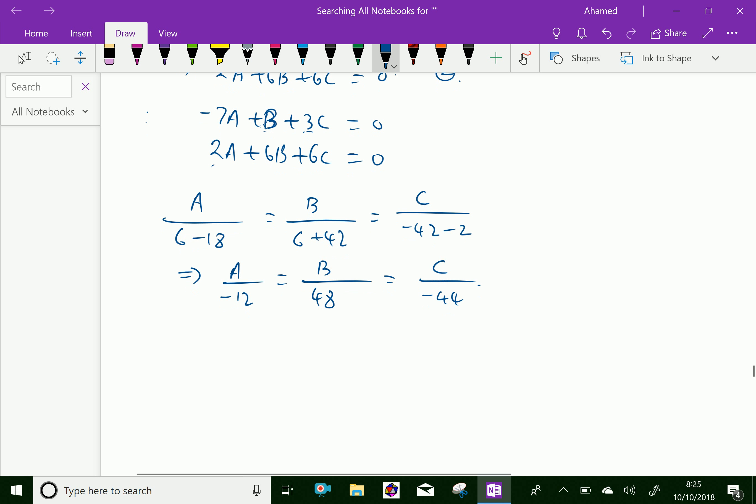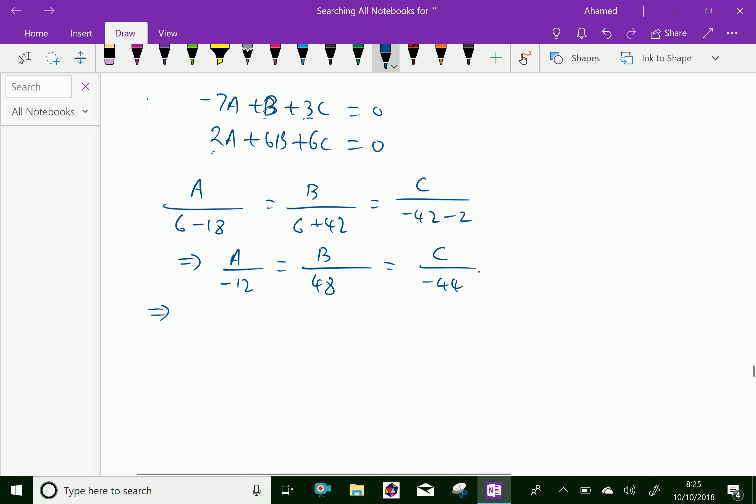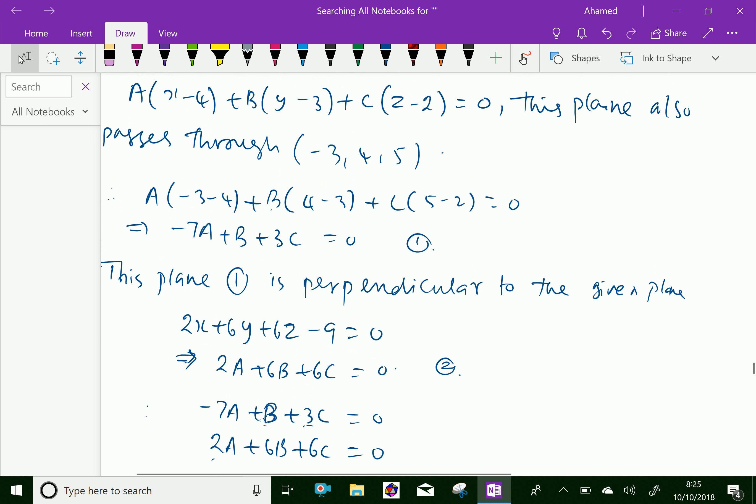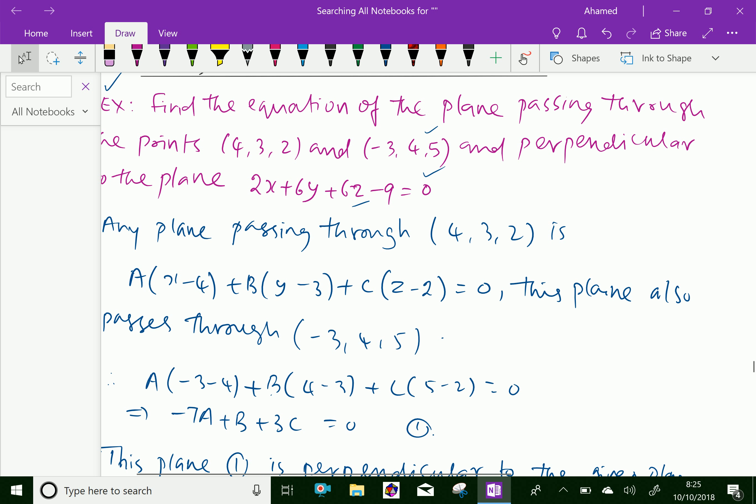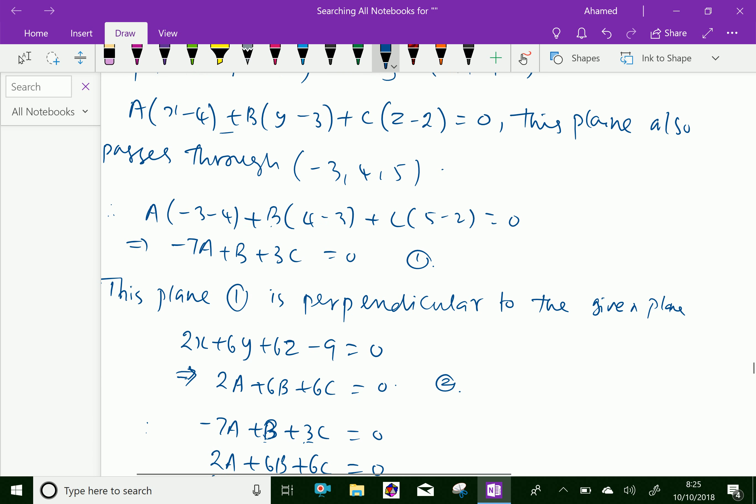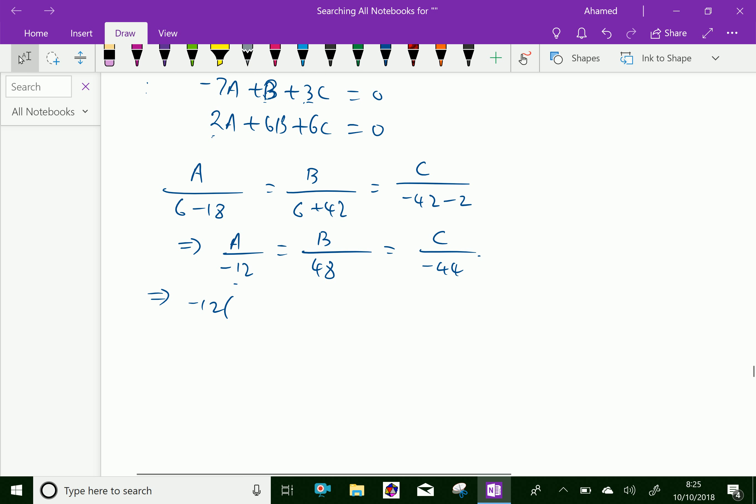Now substitute into the equation: -12(x - 4) + 48(y - 3) - 44(z - 2) = 0.